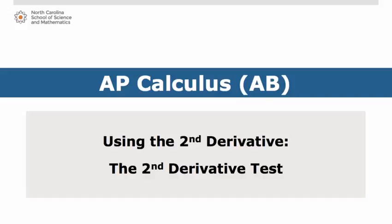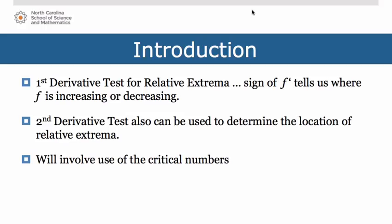Welcome to the second half of our lesson on using the second derivative. Here we're going to talk about the second derivative test. In the last lesson we learned that the first derivative test for relative extrema can tell us where a function f is increasing or decreasing depending upon the sign of the first derivative. The second derivative test is also going to be used to determine the location of relative extrema, involving only the critical numbers, not the intervals around them.